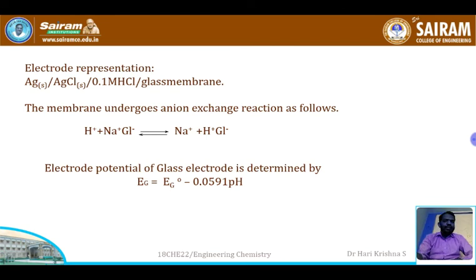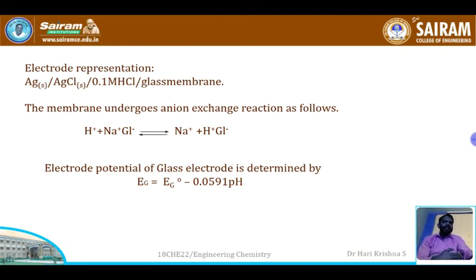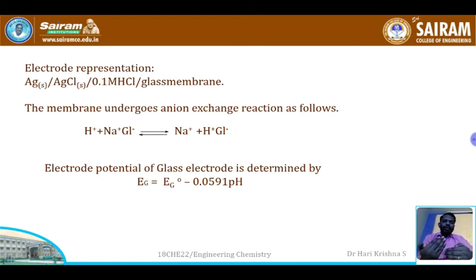The ion exchange reaction at the glass membrane is represented as: H⁺(Na⁺)Gl⁻ → Na⁺ + H⁺Gl⁻, meaning H+ ions inside and outside the bulb get exchanged. This exchange occurs until the H+ ion concentrations inside and outside the bulb are equal, after which the ion exchange reaction stops.